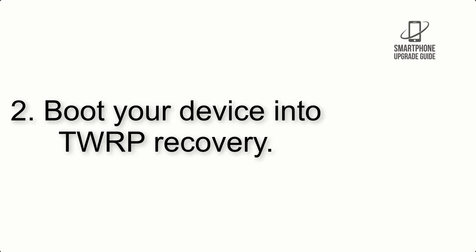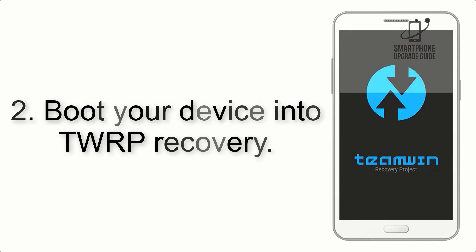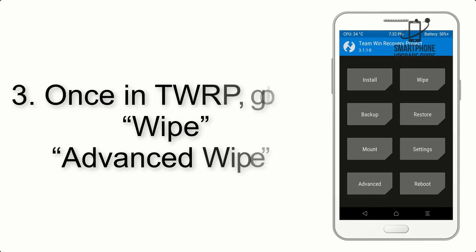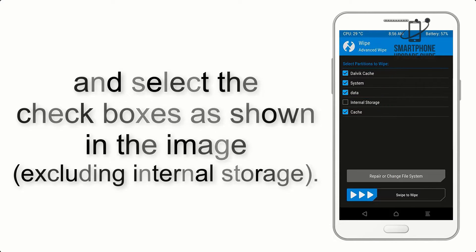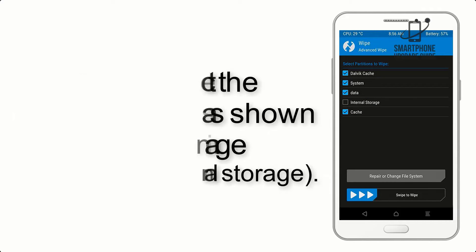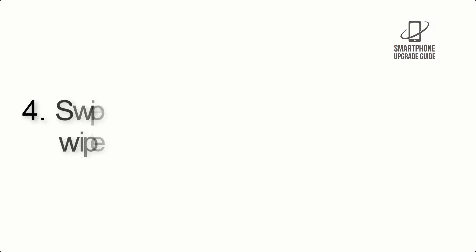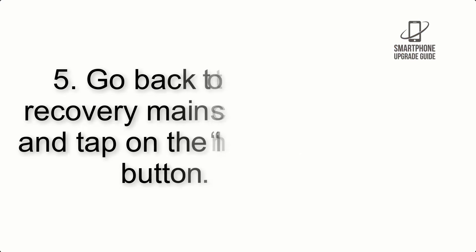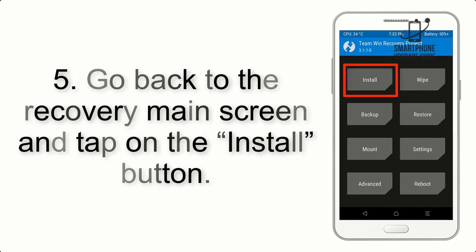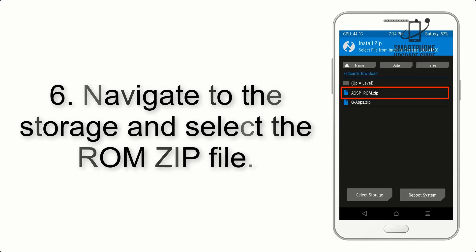Step 2: Boot your device into TWRP recovery. Once in TWRP, click on Wipe Advanced Wipe and select the checkboxes as shown in the image, excluding internal storage. Step 4: Swipe the button to wipe the device.